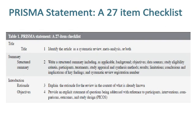Item 2 is the summary: write a structured summary including, as applicable, background, objectives, data sources, study eligibility and summary criteria, participants, treatments, study appraisal and synthesis methods, results, limitations, conclusions and implications of key findings, and the systematic review registration number.